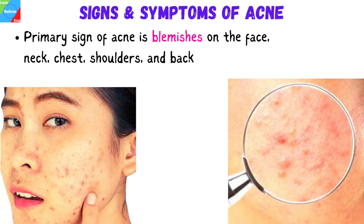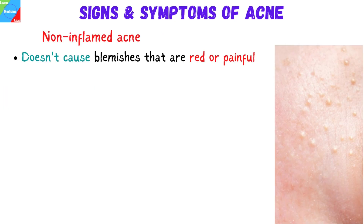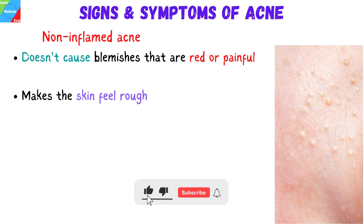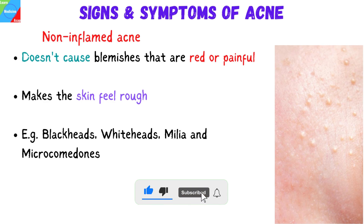What are the signs and symptoms of acne? The primary sign of acne is blemishes, which are easy to spot on oneself or palpable on the skin. They often appear on the face, but acne can also develop on other areas of the body like the neck, chest, shoulders, and back. Non-inflamed acne, also called comedonal acne, doesn't cause blemishes that are red or painful but makes the skin feel rough. Non-inflamed acne includes blackheads, whiteheads, milia, and microcomedones.